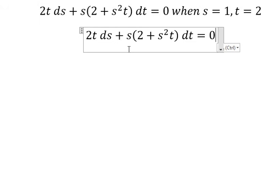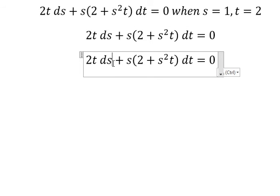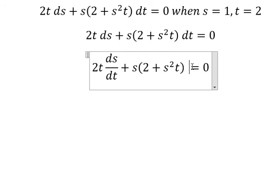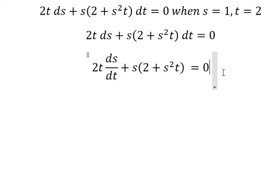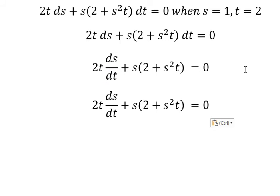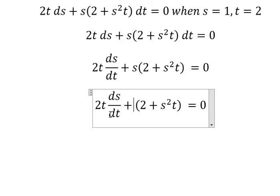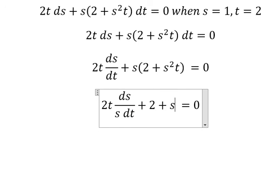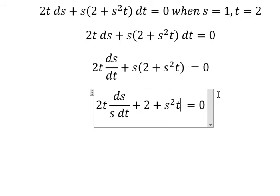We divide both sides by dt. Next, we divide by x. Next, we divide by x squared.